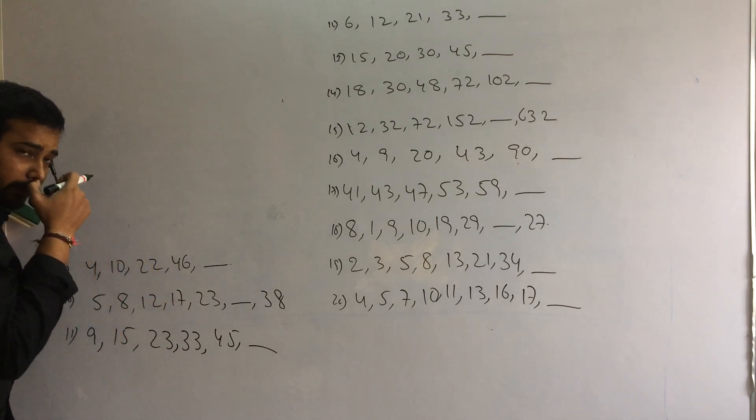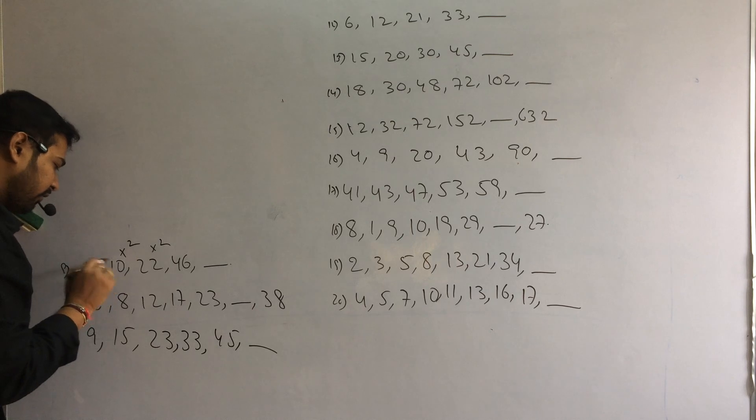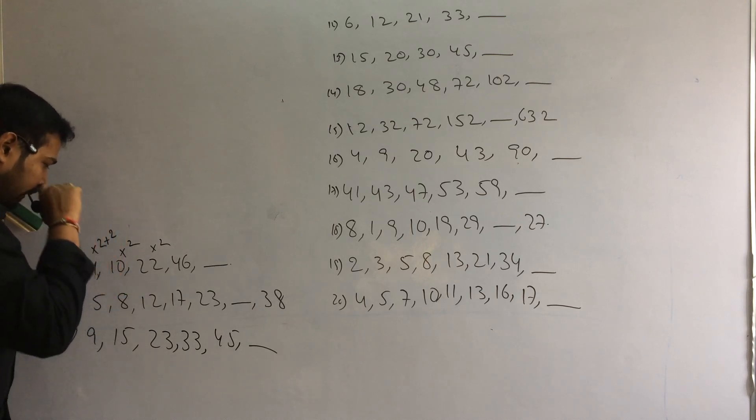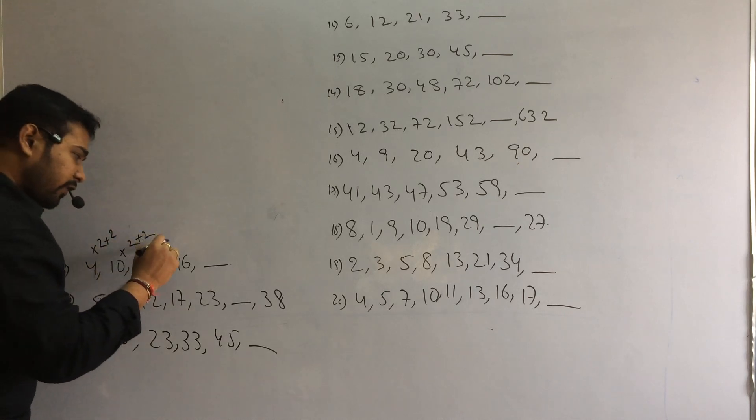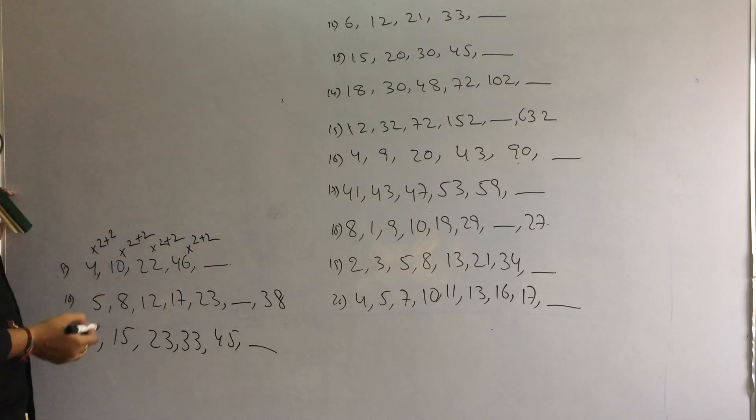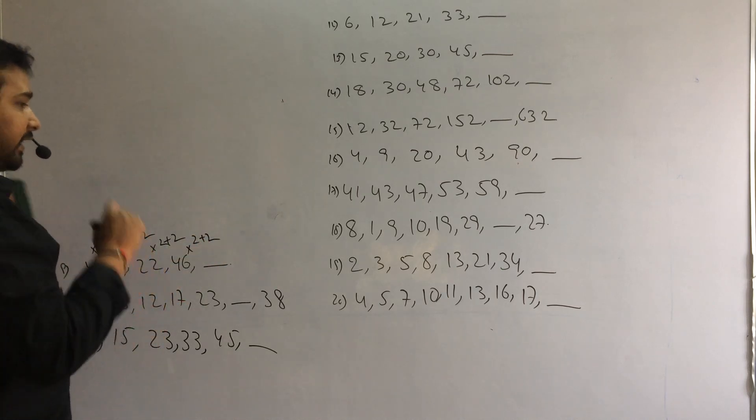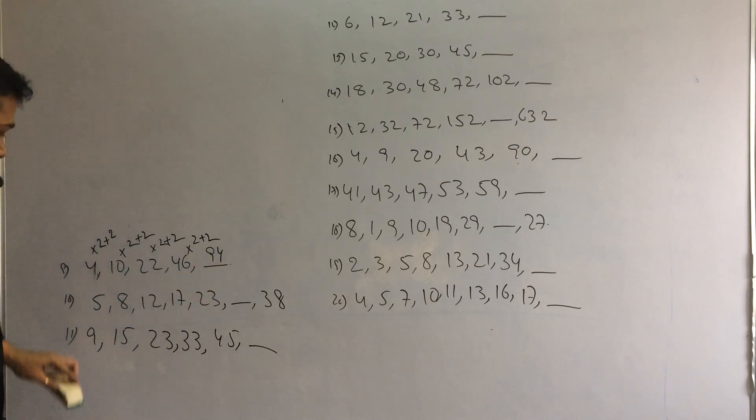Like this difference, 20 to 44 is approximately double. From 10 to 20, double. 4 to 10, double. 4 to 8 plus 2 is 10. 10 twos are 20 plus 2. 20 twos are 44 plus 2. So my logic is times 2 plus 2. 46 times 2 is 92, plus 2, 94. 94 is your answer. So logic is times 2 plus 2.